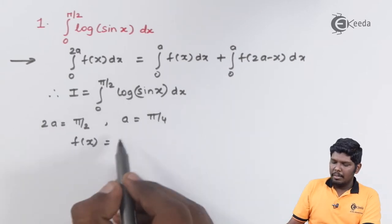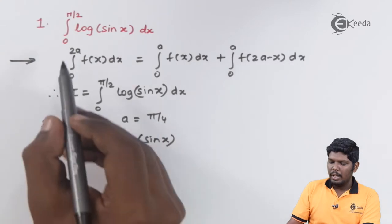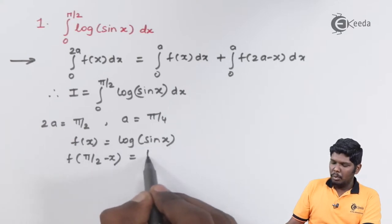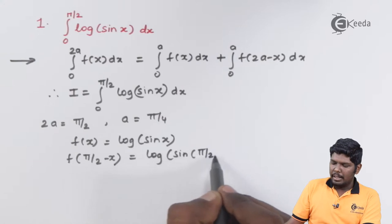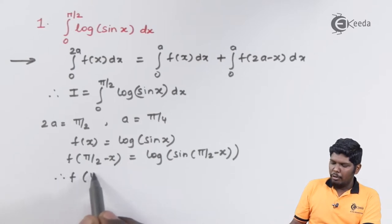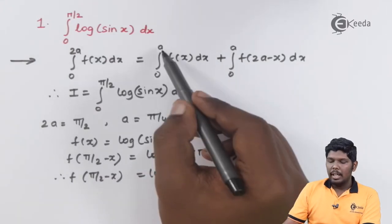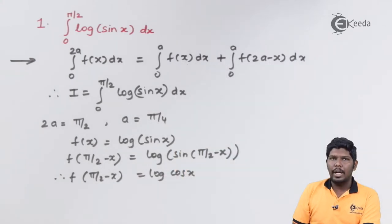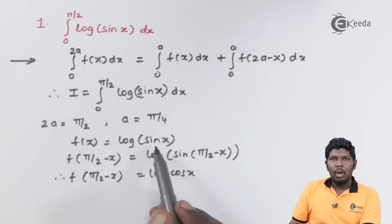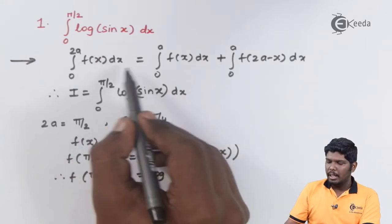The next step is to find f(x) and f(2a minus x). Our f(x) is given as log of sine x. To find f(2a minus x), since 2a = pi by 2, we substitute pi by 2 minus x, giving log of sine(pi by 2 minus x). We know that sine(pi by 2 minus x) = cos x, so f(pi by 2 minus x) = log of cos x.